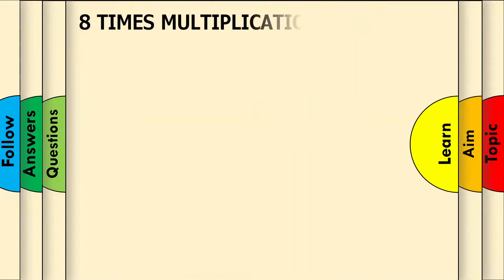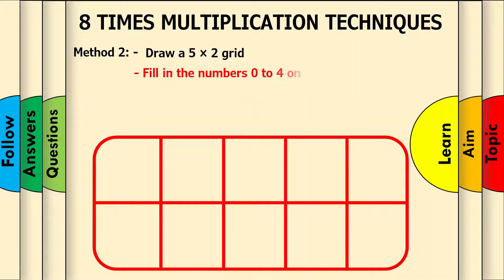Method 2: draw a 5 by 2 grid and fill in the numbers 0 to 4 on the first row. 0, 1, 2, 3, 4.